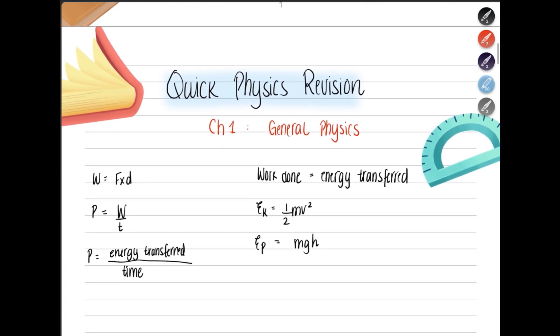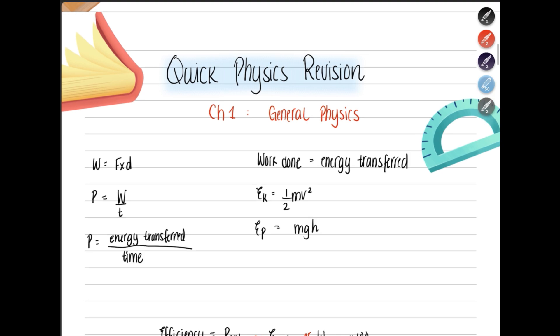Moving on, we have some more equations. This is work. Work done equals force applied multiplied by the distance the object moves. Power. Work has the SI unit of joules. Power has the SI unit of watts. Power is basically work done per time. And then work done and energy transfer are the same.